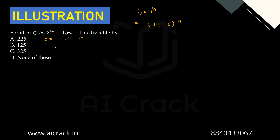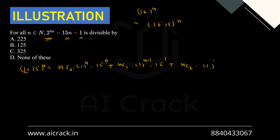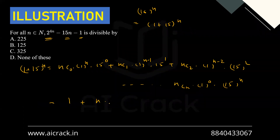Let's expand (1+15)^n using the binomial theorem: it equals nC0·1·1 + nC1·1^(n-1)·15 + nC2·1^(n-2)·15² + ... + nCn·15^n. Simplifying: nC0 is 1, so the first term is 1. nC1 is n and the second term is 15n, which matches the 15n in our original expression.